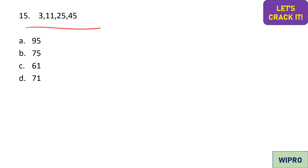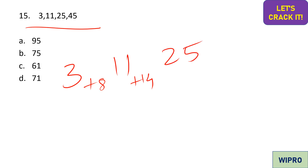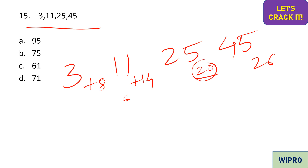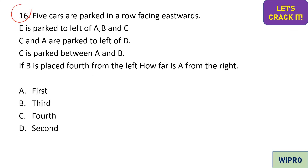Here is a number series question: 3, 11, 25, 45... The differences are: +8, +14, +20 — increasing by 6 each time. So the next difference is +26. Therefore, 45 + 26 = 71. Option D is the correct answer.